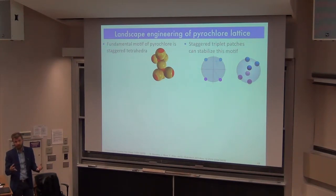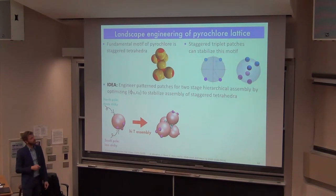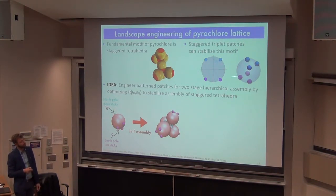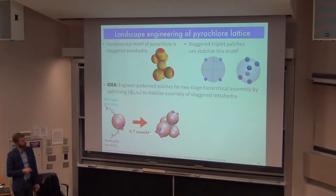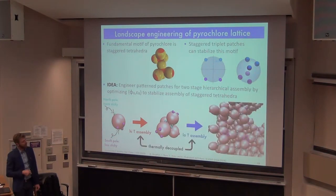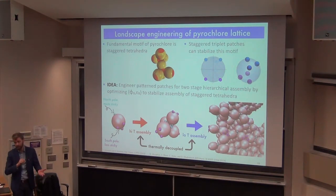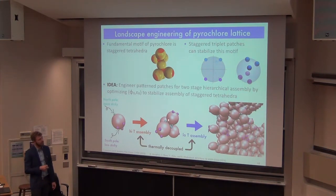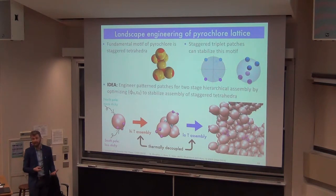We engineer a two-stage hierarchical assembly procedure. The north pole patches are made more sticky than the south pole patches, allowing high-temperature assembly where the north poles form tetrahedra. At low temperature, the south poles become thermally active and assemble the opposing staggered tetrahedra. This thermally decouples the two assembly stages, producing a monodisperse mixture of tetrahedra that subsequently assemble into the pyrochlor lattice, ensuring we don't incorporate too many defects.